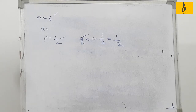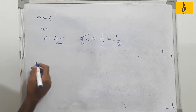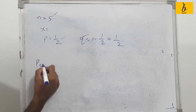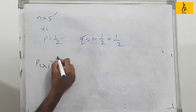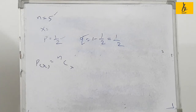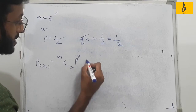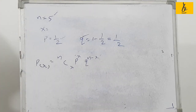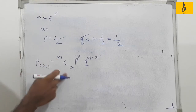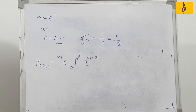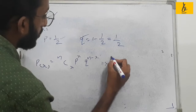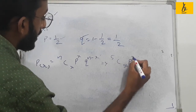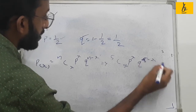Step 3 is to find P of 0, P of 1, P of 2, P of 3 — the probability values. The probability function is: P of x equals nCx times P raise to x times Q raise to n minus x. Since n equals 5, this becomes 5Cx times p to the power x times q to the power 5 minus x.